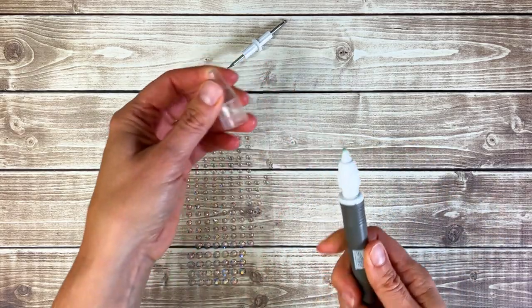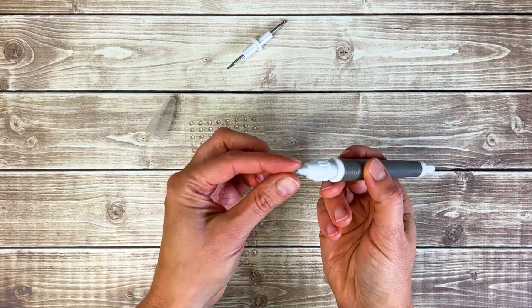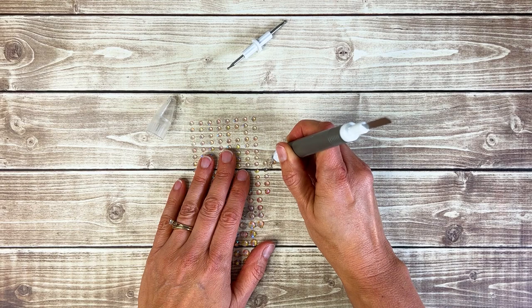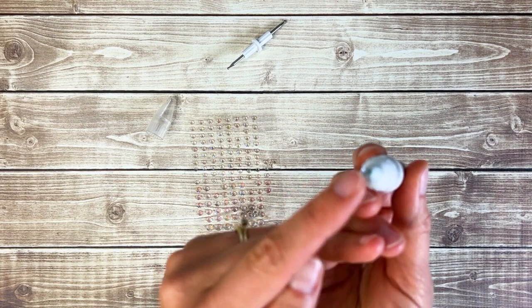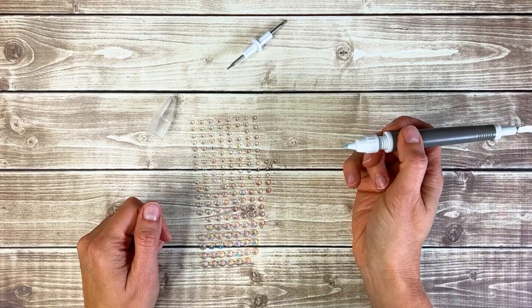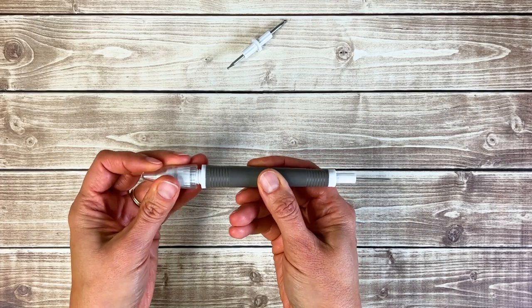And then this other end here I think works even better for embellishments like these iridescent rhinestones. It's got putty on it so you can pick up the embellishment and then the sticky side is down like that so you can place it on your card. You can get replacement putty tips if you need them.